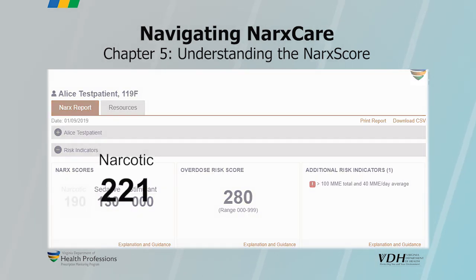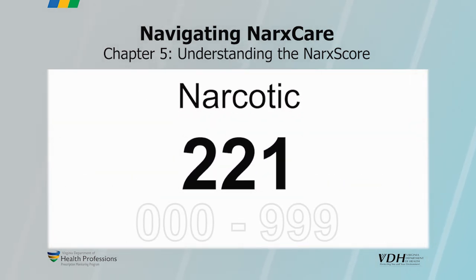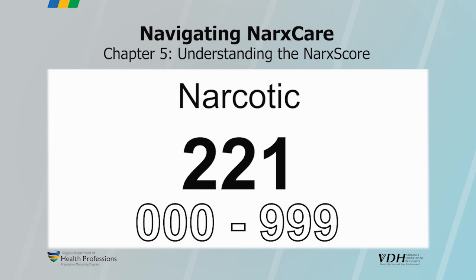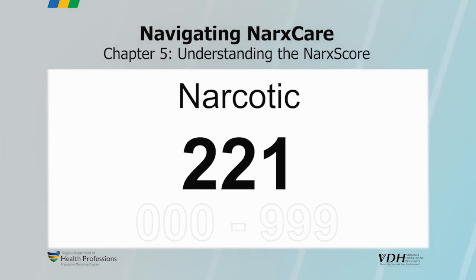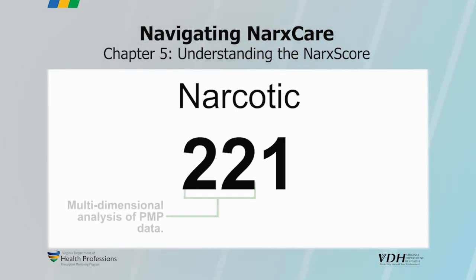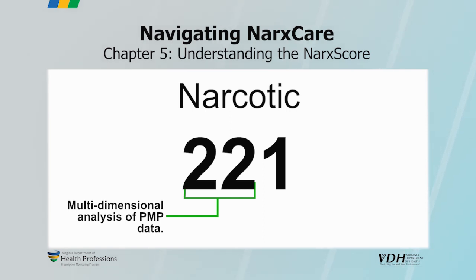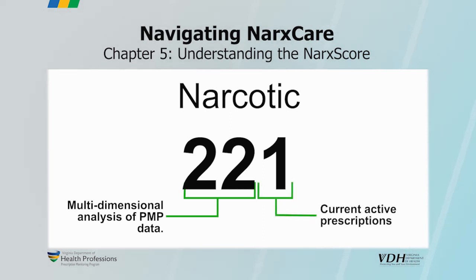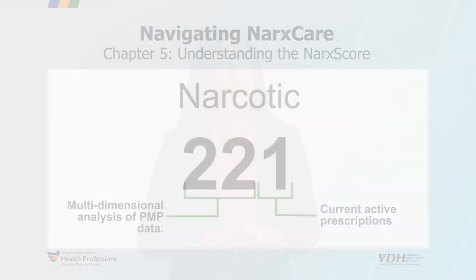Each NARC score is made up of three digits, from 000 to 999. The first two digits result from a multi-dimensional analysis of PMP data. The third digit in each score represents the number of current active prescriptions.